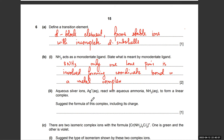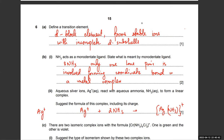Silver ions react with ammonia to form a linear complex — this is Tollens' reagent. The silver ion gets surrounded by two NH3 molecules. The linear complex formed has silver with ammonia lone pairs forming dative bonds from each side, giving a charge of plus one overall.